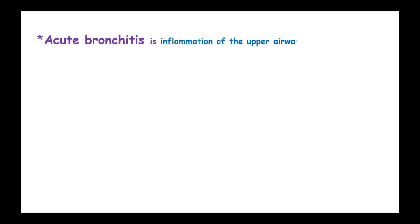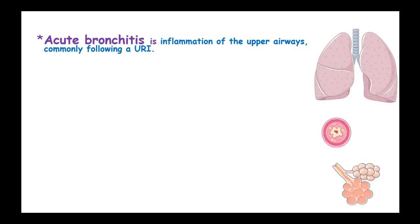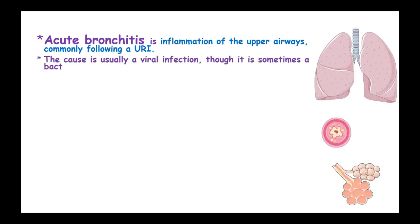Acute bronchitis is an inflammation of the upper airways commonly following an upper respiratory tract infection. The cause is usually a viral infection, though it is sometimes a bacterial infection and the pathogen is rarely identified.